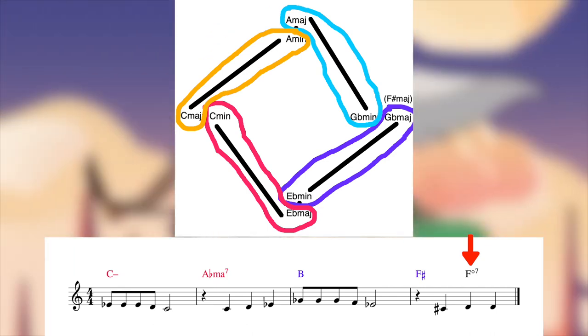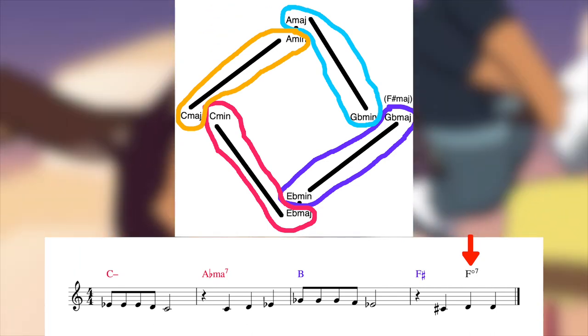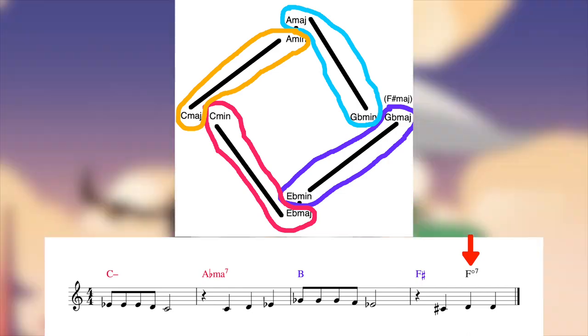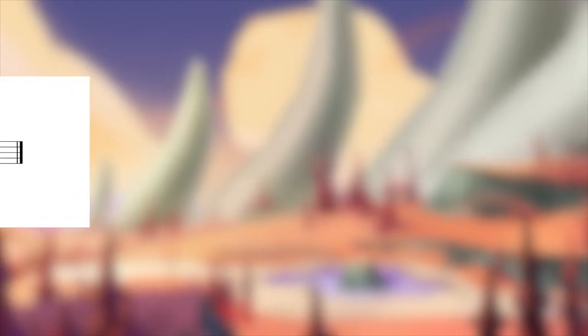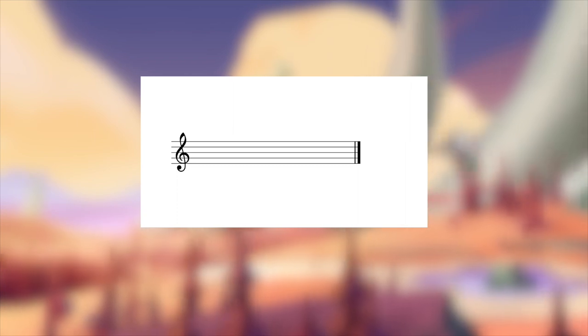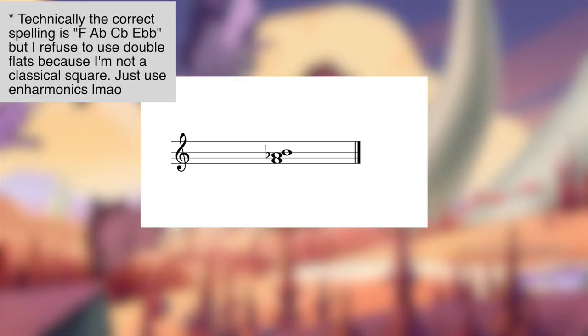This chord, I would argue, is the most clever chord in the entire tune, both in the way it functions musically and how it thematically ties in to both the tune and the theory behind it. The notes in the diminished 7 chord are F, Ab, B, and D.